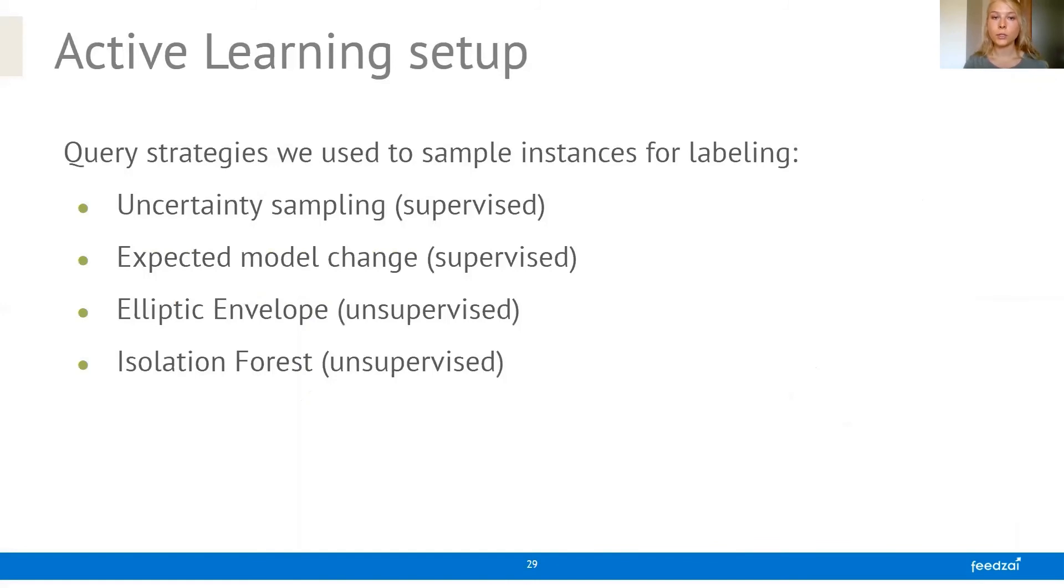The query strategies that we used are four, and two of them are supervised. That means they rely on a supervised model that is trained on the labeled pool and evaluated on the unlabeled pool in order to pick the instances. And then we have two unsupervised methods, which basically are anomaly detection methods based on the labeled pool. So we're trying to make the labeled pool more heterogeneous.